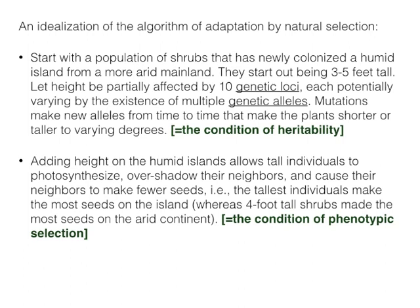On the continent the shrubs varied from three to five feet tall when mature, and that was a great height to have in this arid land. Let height be partially affected by ten genetic loci — that's not unusual, lots of quantitative dimensions of organisms are affected by ten or more genetic loci. Each of these genetic loci potentially varies by the existence of multiple genetic alleles. At each locus you could have an allele that made the plants taller, shorter, medium, or very short — anything like that.